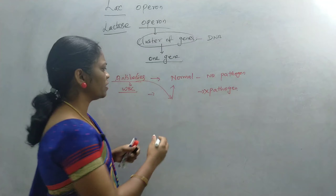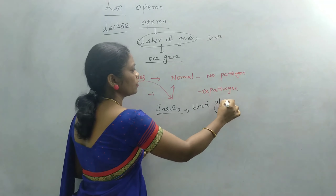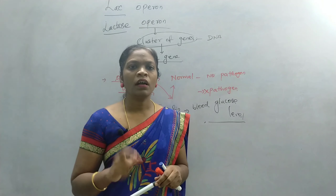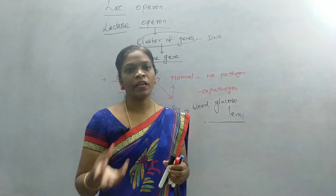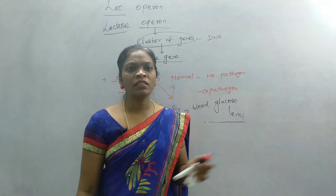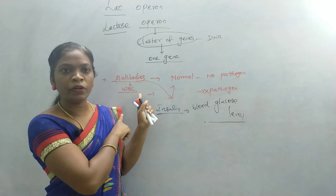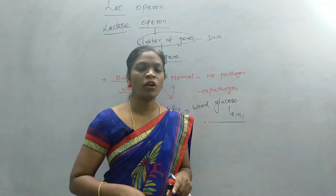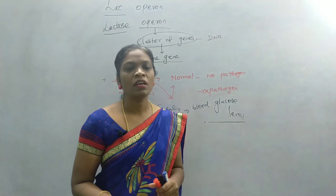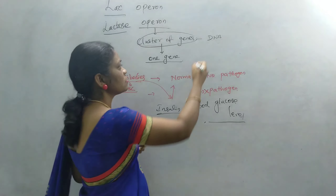One more example is insulin. We all know insulin controls the blood glucose level. When there is increased blood glucose level in our bloodstream, the hormone insulin converts the excess glucose into glycogen and stores it in the liver and muscles. Insulin is produced only when there is excess blood glucose level. So, not all hormones or proteins in our body are synthesized all through the day — when there is a need, these substances are produced. That is known as gene expression. Some genes that always produce substances are known as constitutive genes.